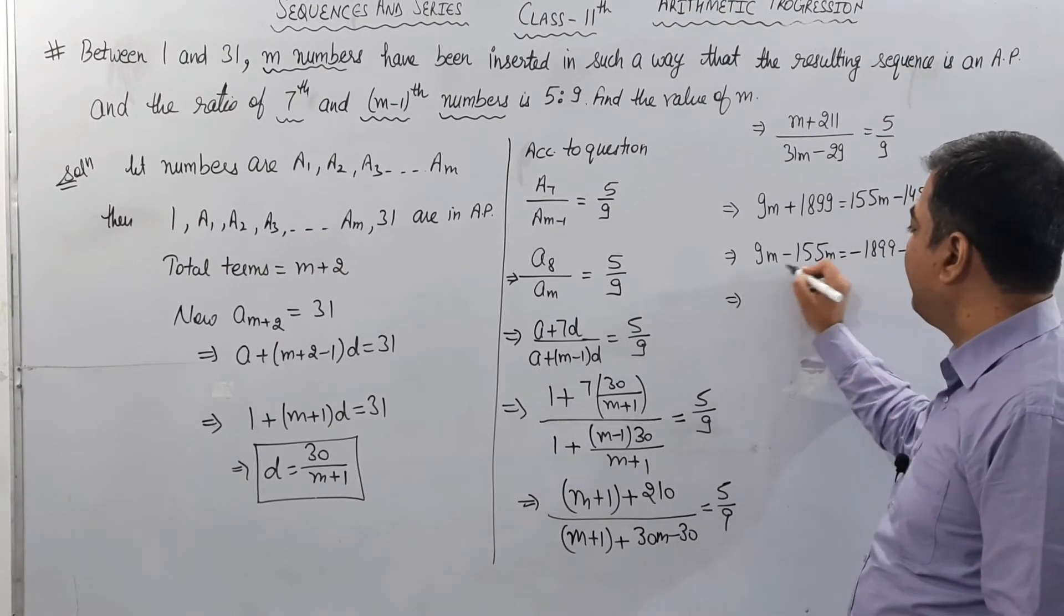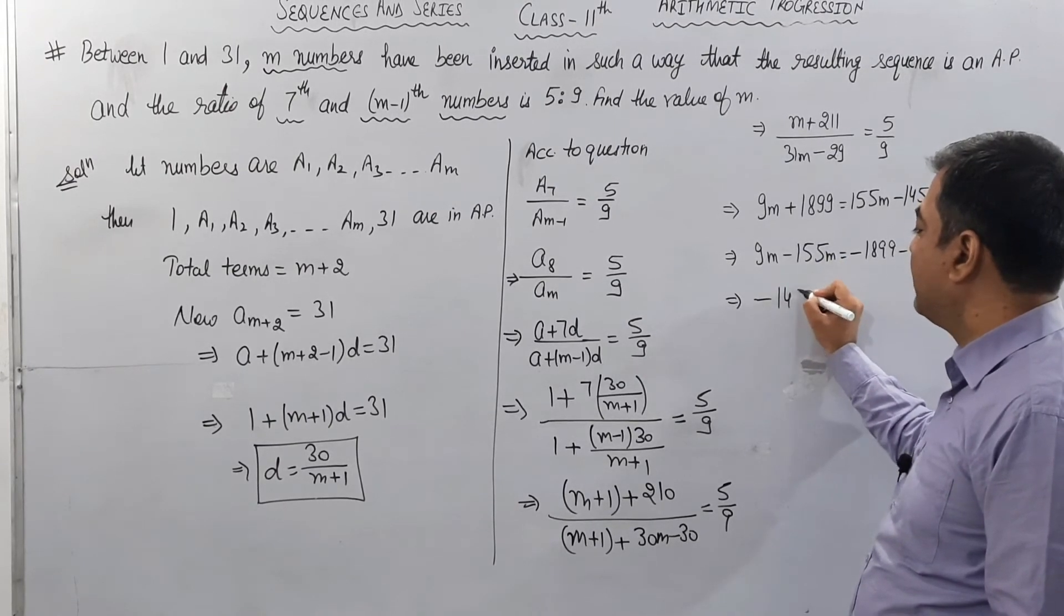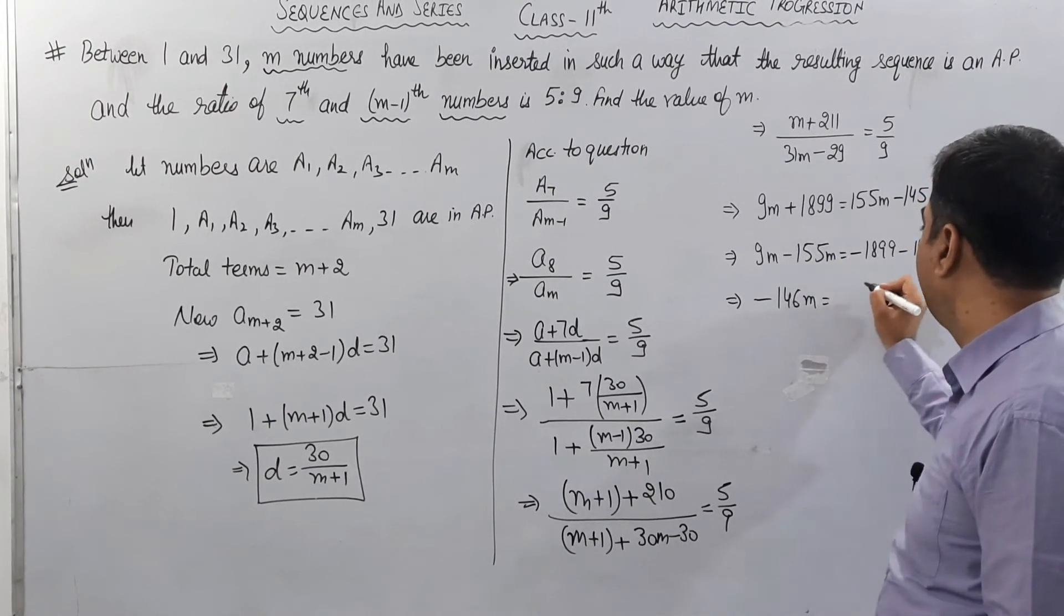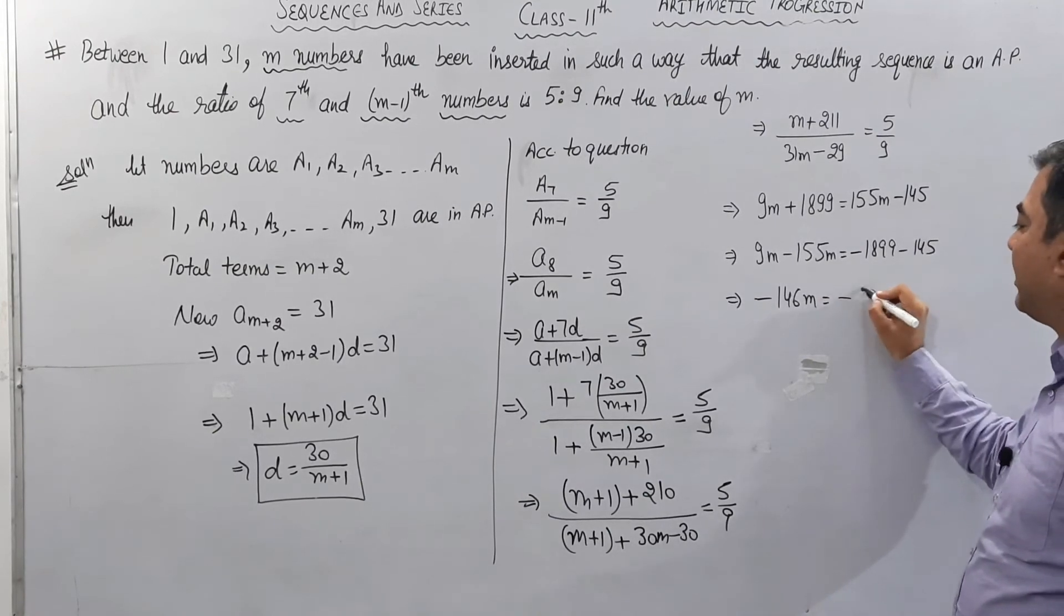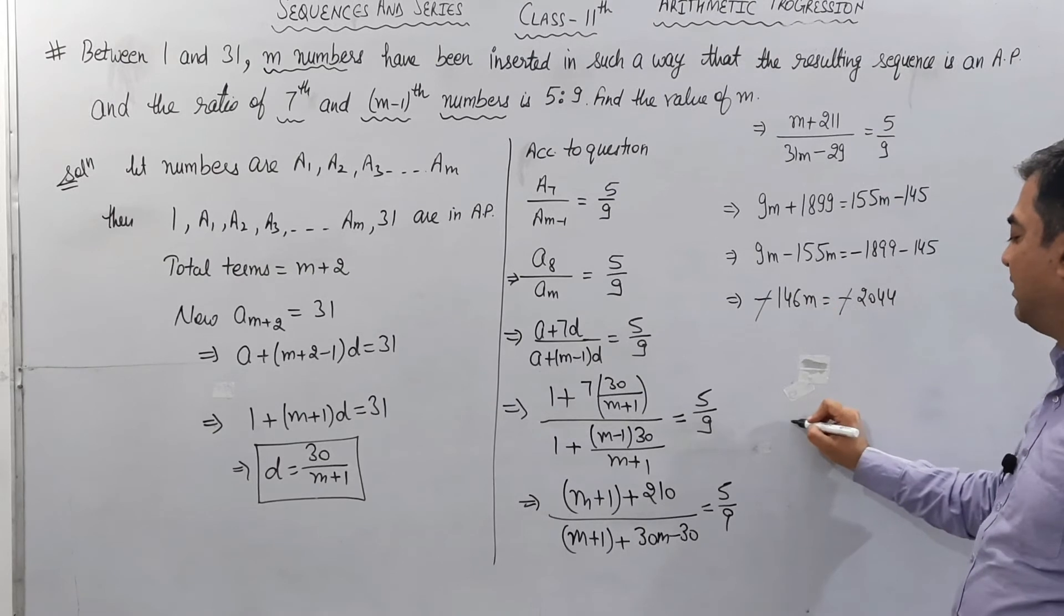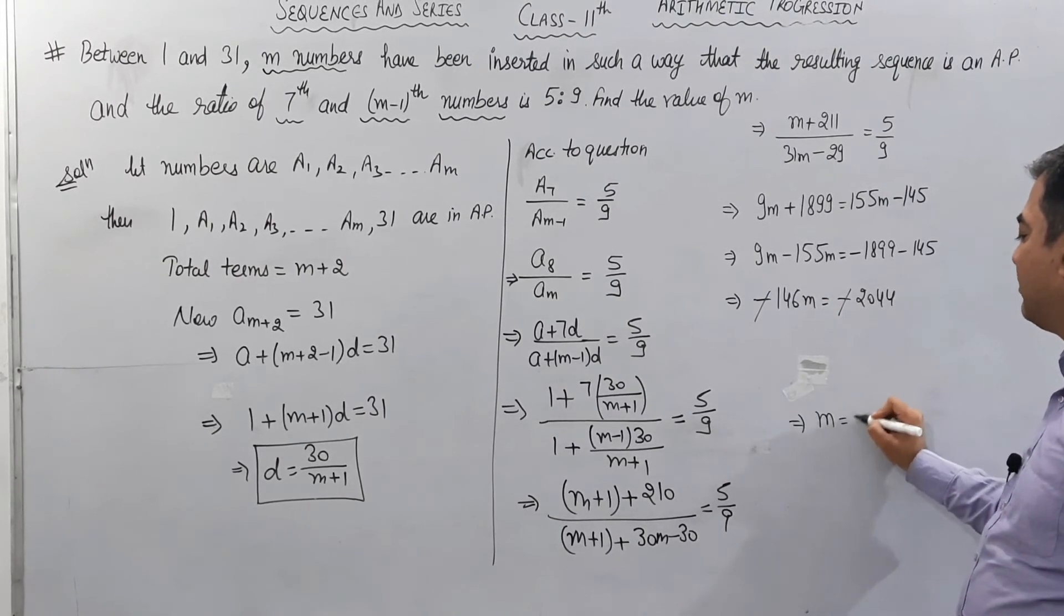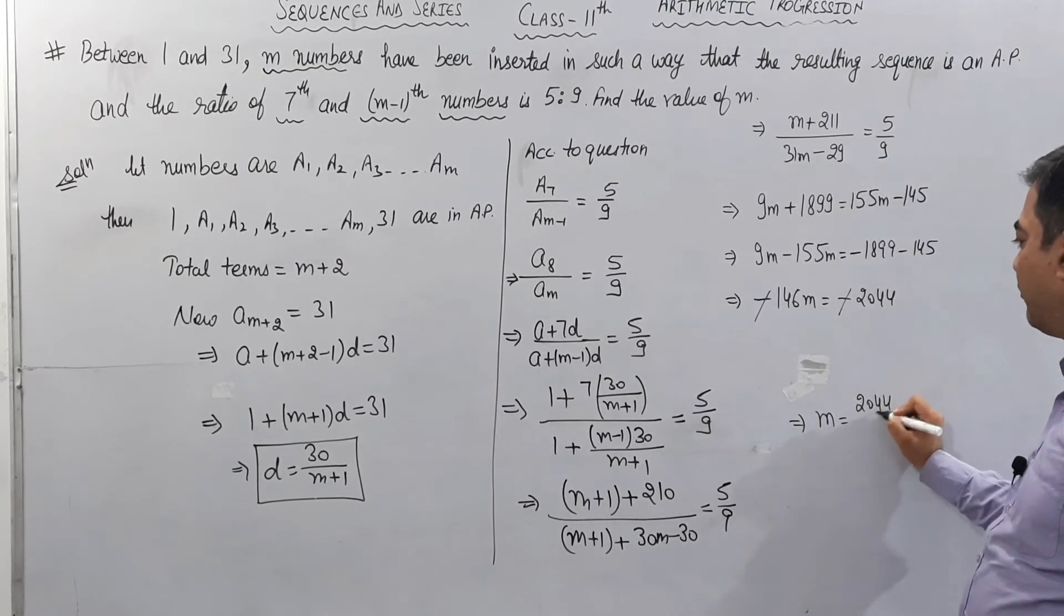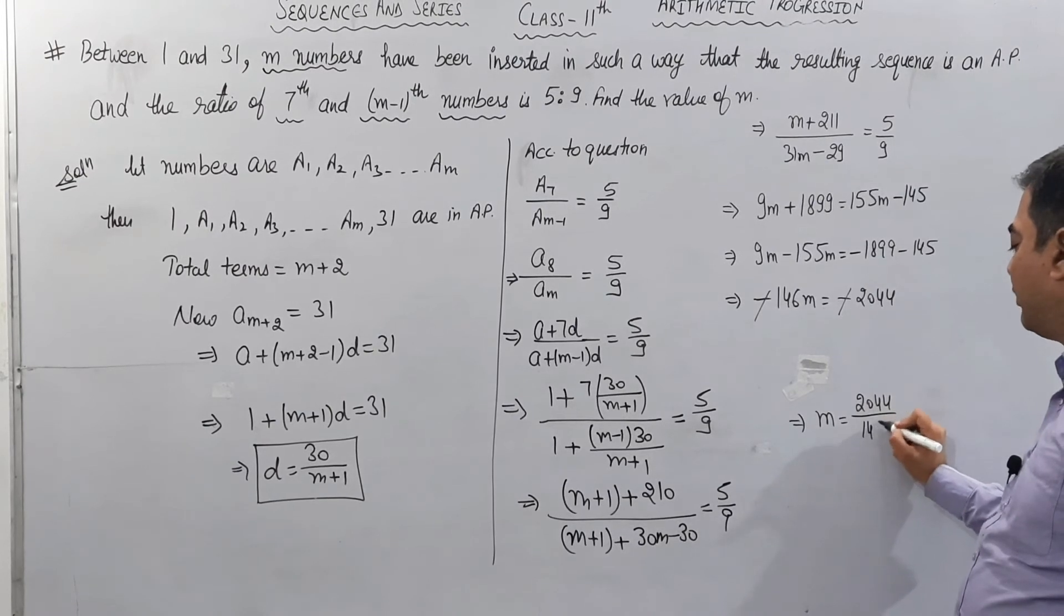9m minus 155m equals -146m. 1899 minus 145 equals 1754. Wait, let me recalculate: 9m plus 1899 equals 155m minus 145. So 9m minus 155m equals -145 minus 1899, giving -146m equals -2044. Cancel minus signs, m equals 2044 upon 146.